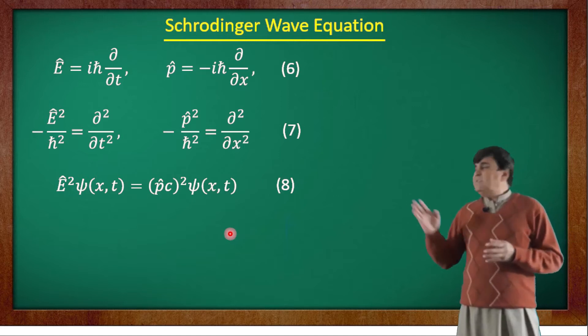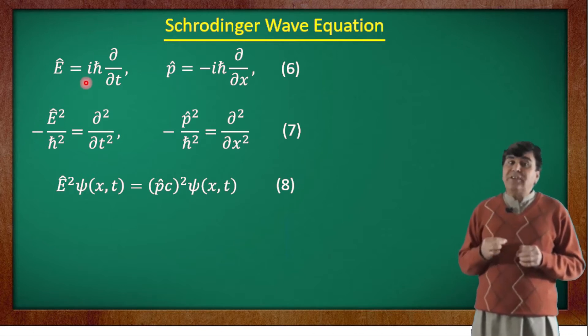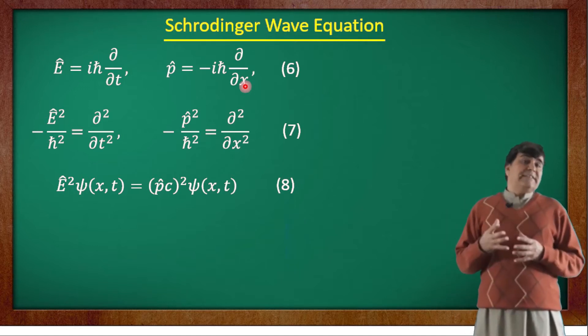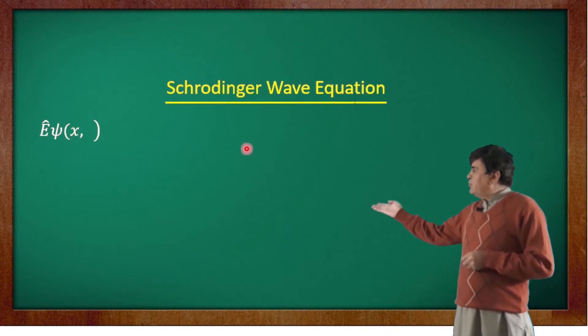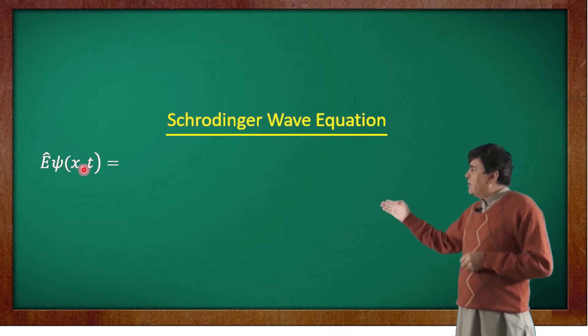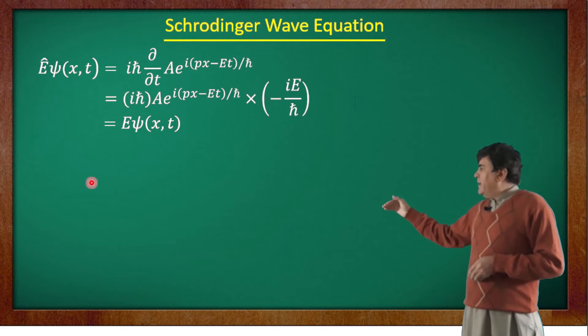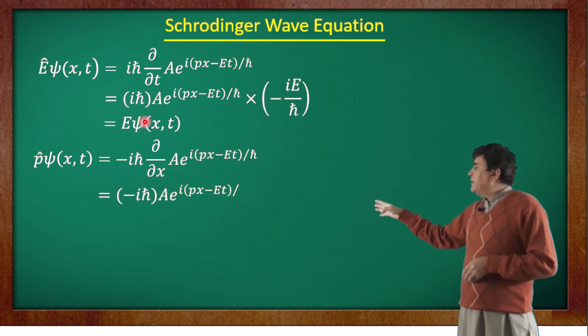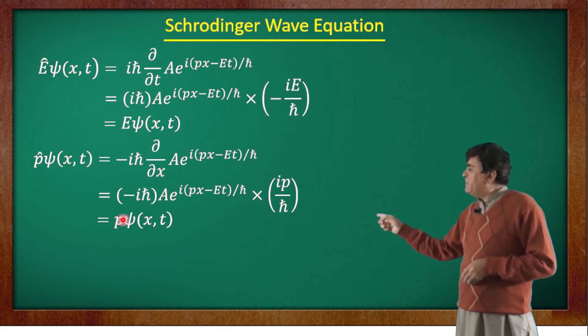Now the operators present in equation 6 have another very peculiar property: they both constitute eigenvalue equations. That is, if we apply these operators to the wave function and carry the necessary mathematical steps, we can write the operator E applied to the wave function equals the number E times the wave function. Similarly, applying the operator P to the wave function and carrying the necessary mathematical steps that you see on the board, we can write the operator P applied to the wave function produces the number P times the wave function.